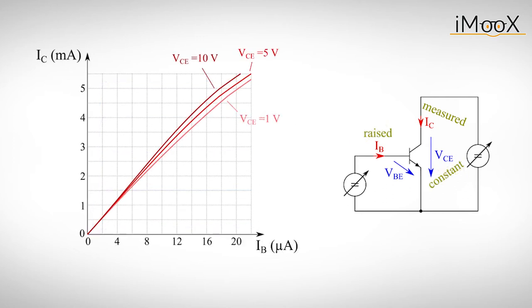Last but not least, we can measure the output current IC as a function of the base current IB. This way, we get the so-called transfer characteristic of the transistor.